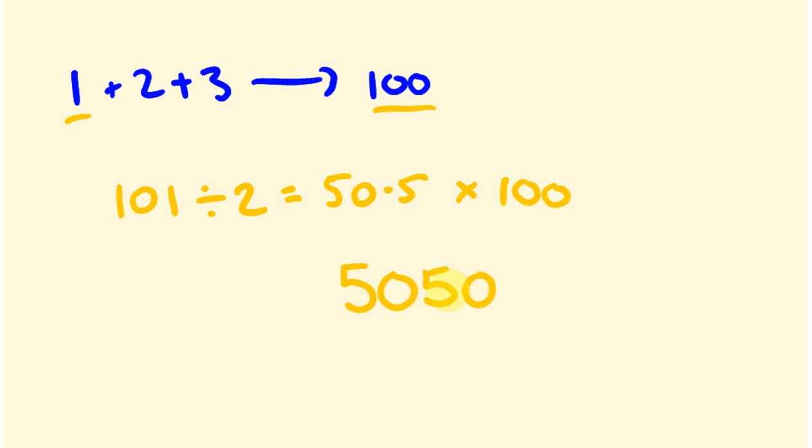So 1 plus 2 plus 3 plus 4, all the way to 100, is 5050. I'll tell you what, it's a great little one to race your mates with. You could say, we'll see who could add the numbers 1 to 100 the fastest. I'll tell you what, you can use a calculator or I won't. And see, here you go.